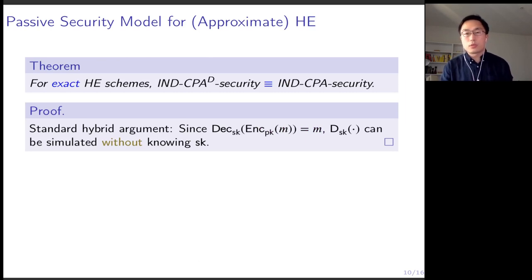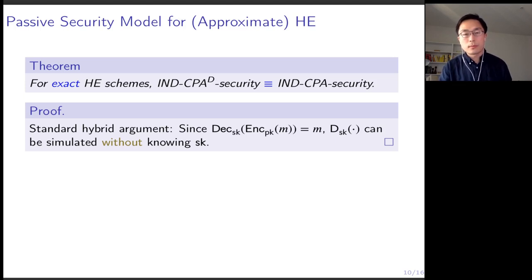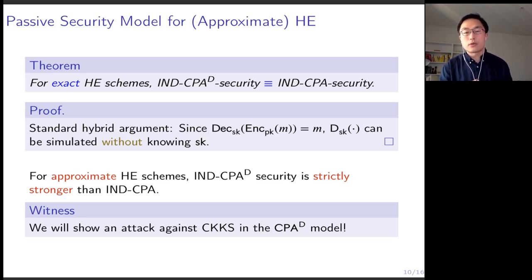With this definition, the first sanity check we want to perform is to ensure we don't give unnecessary power to the adversary. Formally, we want to show that for exact homomorphic encryption schemes, this new IND-CPA-D security is equivalent to the classic IND-CPA security — we don't give any unnecessary power to the adversary. But for approximate schemes, we can show that IND-CPA-D security is strictly stronger than classic IND-CPA security. We will show this by presenting a key recovery attack against the approximate scheme CKKS in the IND-CPA-D model.